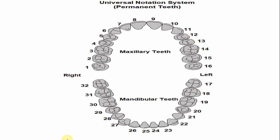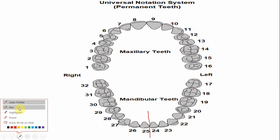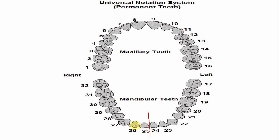In the universal numbering system, the midline separates the central incisors, and the lateral incisor is the second tooth from the midline. The left mandibular lateral incisor and the right mandibular lateral incisor are identified in this system.